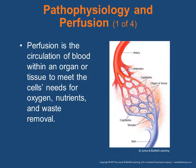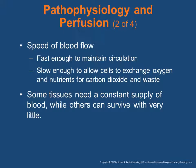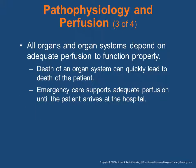The pathophysiology of perfusion — the circulation of blood within an organ or tissue to meet the cell's needs for oxygen, nutrients, and waste removal — occurs in the capillary beds of each tissue within each organ. The speed of blood flow must be fast enough to maintain circulation, but slow enough to allow cells to exchange oxygen and nutrients for carbon dioxide and waste. Some tissues need a constant supply of blood while others can survive with very little — think your fingertips versus your heart, brain, kidneys, and liver. All organs and organ systems depend on adequate perfusion to function properly.